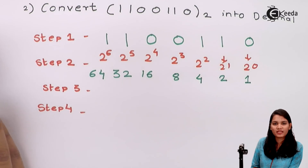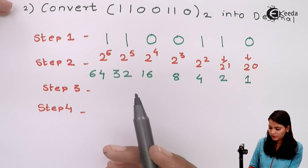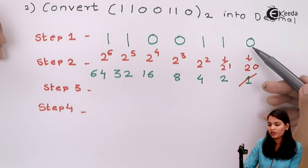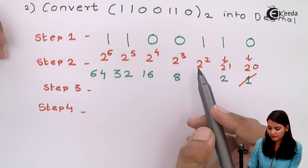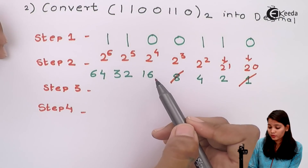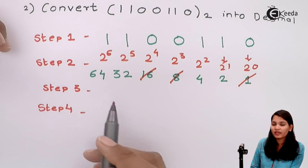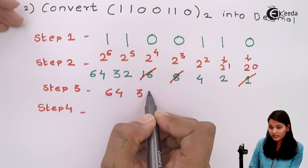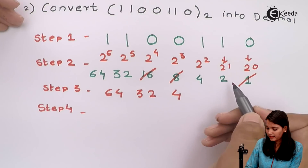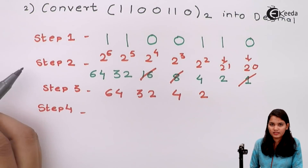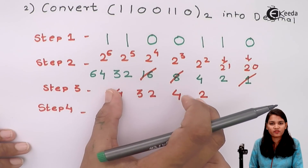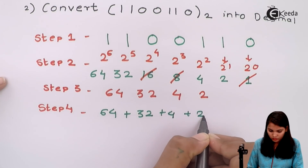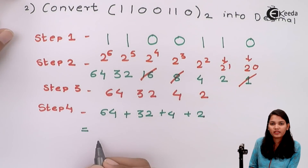Step 3 is to cancel out the weightage values placed below 0 bits. There are 3 zeros in this number. So 1 will be cancelled because 0 is present there, 8 will also be cancelled, and 16 will also be cancelled. The remaining weightage values are 64 plus 32 plus 4 plus 2, which gives us 102.